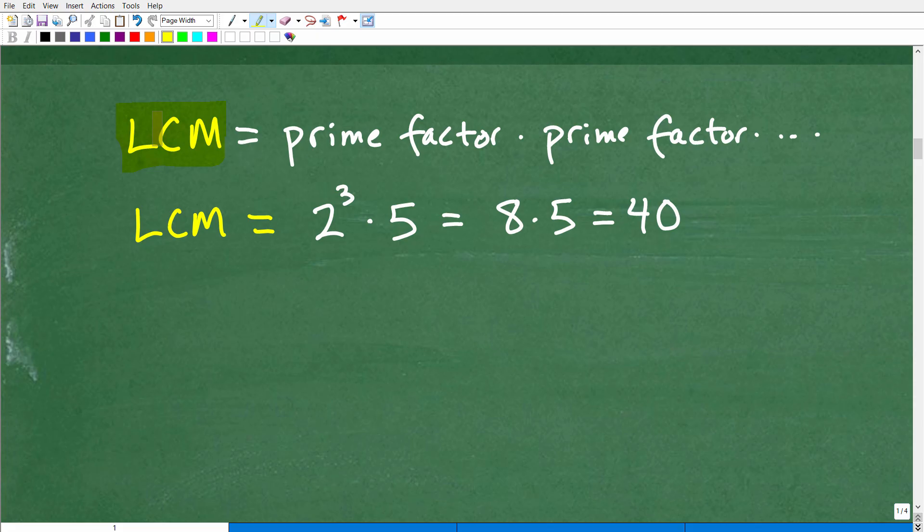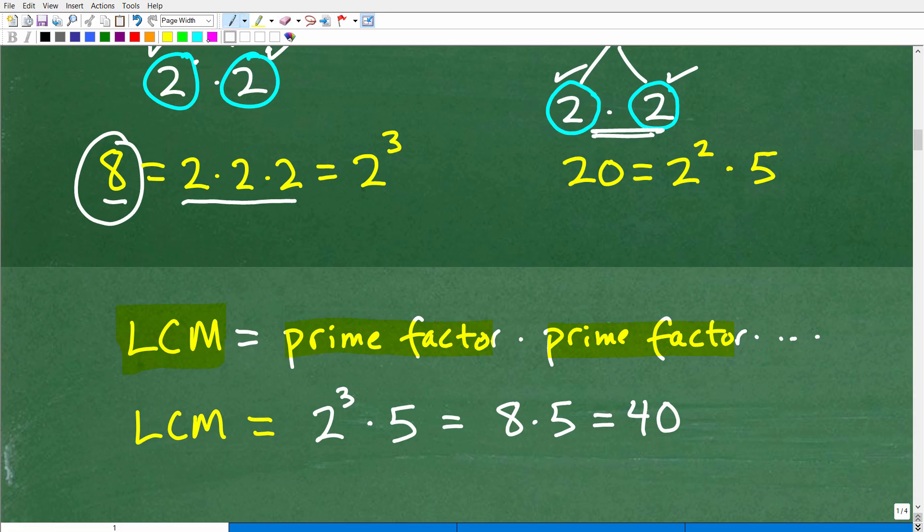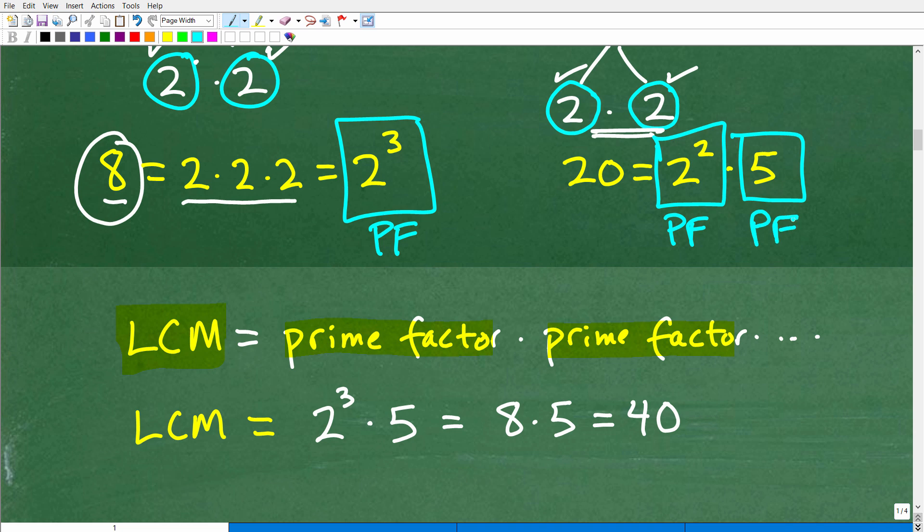To find the lowest common multiple, you need to multiply each prime factor between the two numbers. Let's go back here and look at the prime factors. Let me make this really clear so there's no confusion because this is where the good part comes in. Here's a prime factor, this is a prime factor, and this is a prime factor. When we prime factored both of these numbers, we end up with this is a prime factor, this is a prime factor, and this is a prime factor.